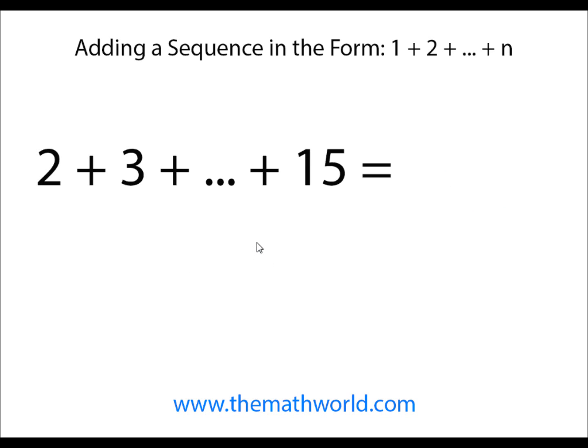In our last example we're going to look at a little bit different of a sequence. As you can tell we don't have 1 in this particular case. It's just 2 plus 3 all the way to 15. We're still going to do the same thing as before, but at the very end once we get our number we're going to subtract 1 from it since 1 is not being added in this equation.